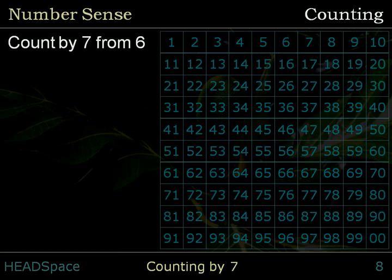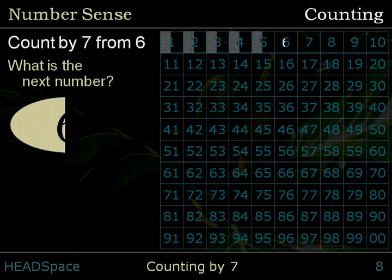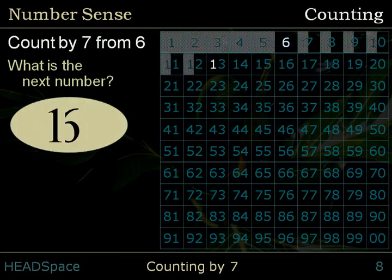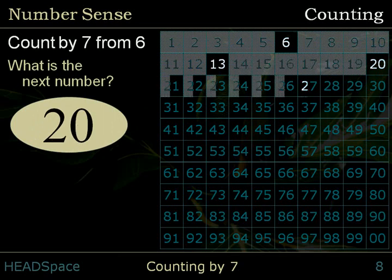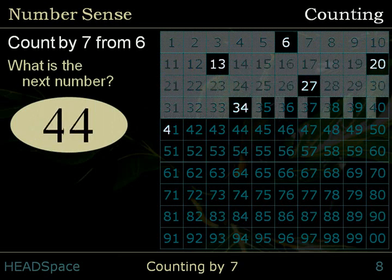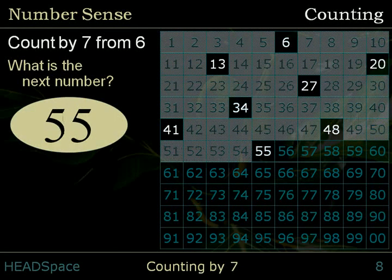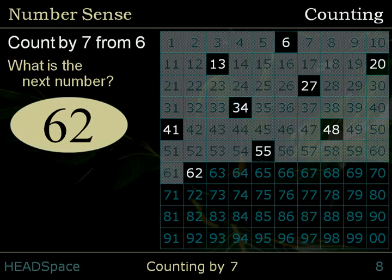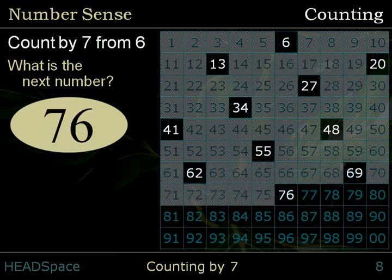Count by 7 from 6. What is the next number? 6, 13, 20, 27, 34, 41, 48, 55, 62, 69, 76.